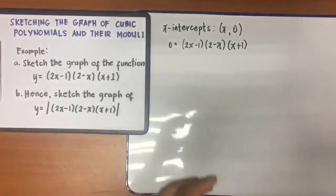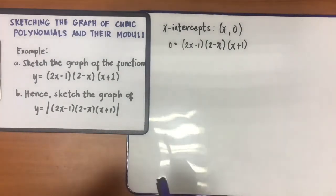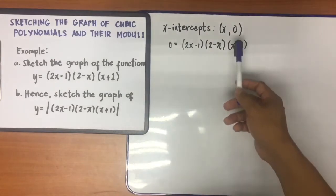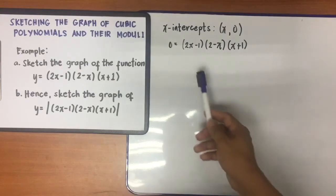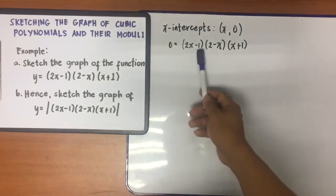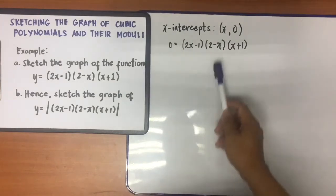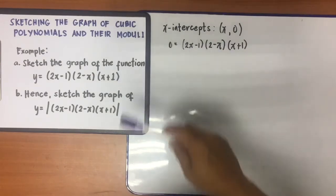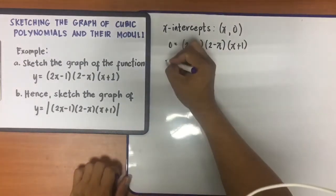The next step to get the x-intercepts is to equate each factor to zero: 2x − 1 = 0, 2 − x = 0, and x + 1 = 0. This will give us three solutions.